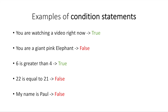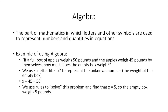So these are called condition statements and the way they're formulated usually is you state it. You just say it. You don't say like, is this greater than 4? You just say, this is greater than 4 and then the computer says yes or no, and then it decides.